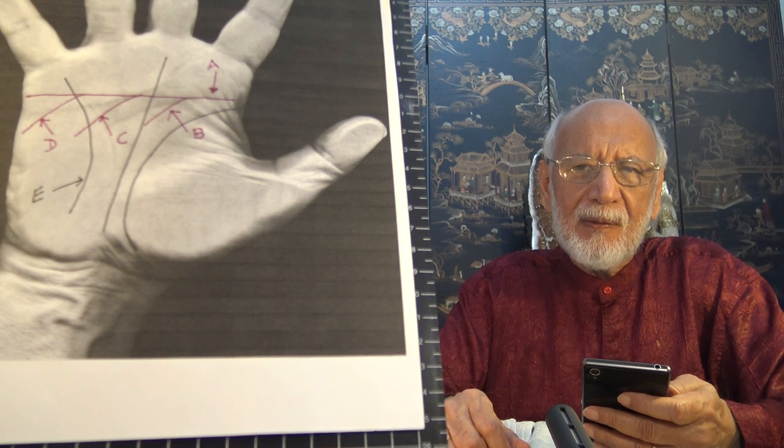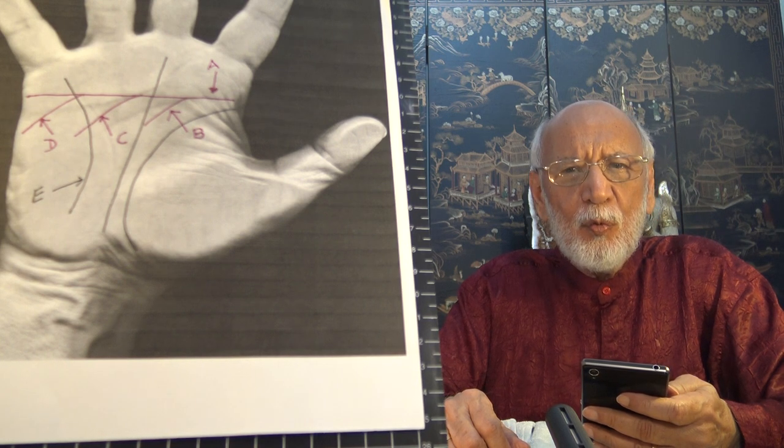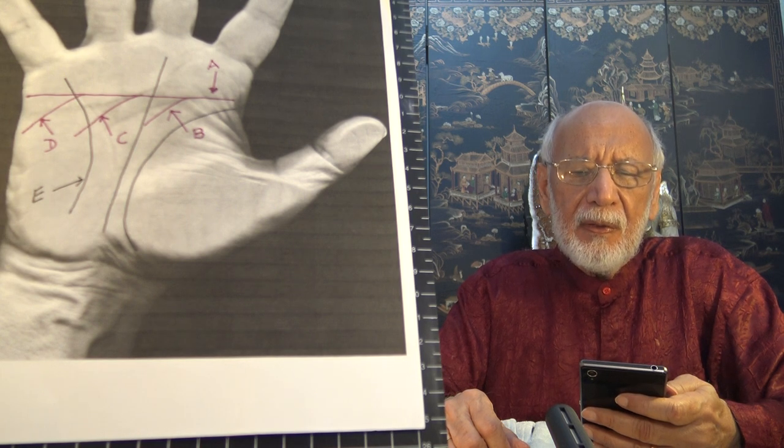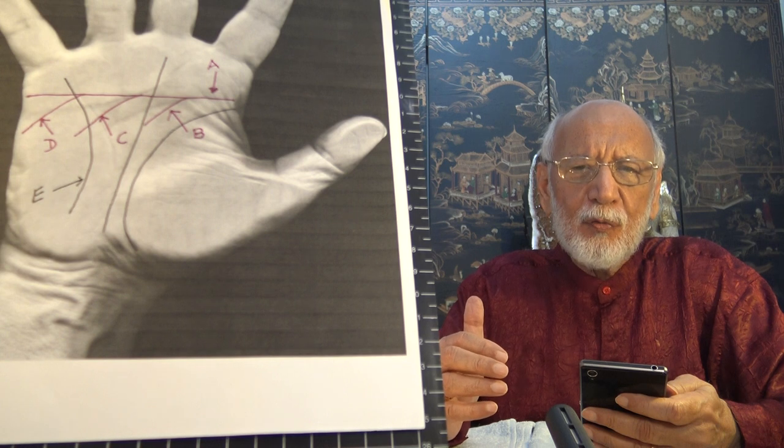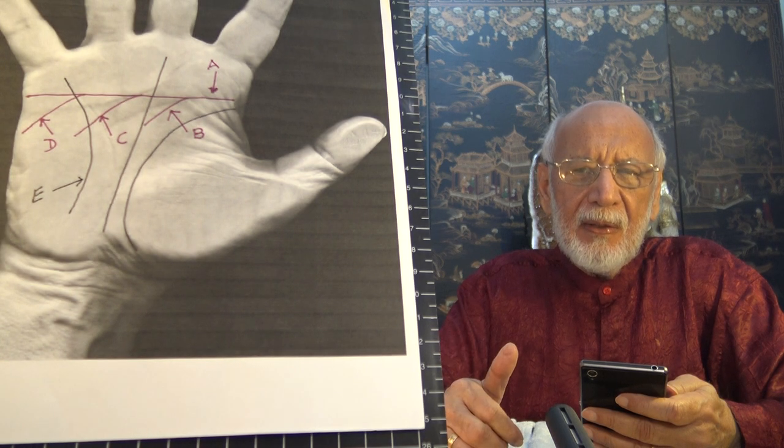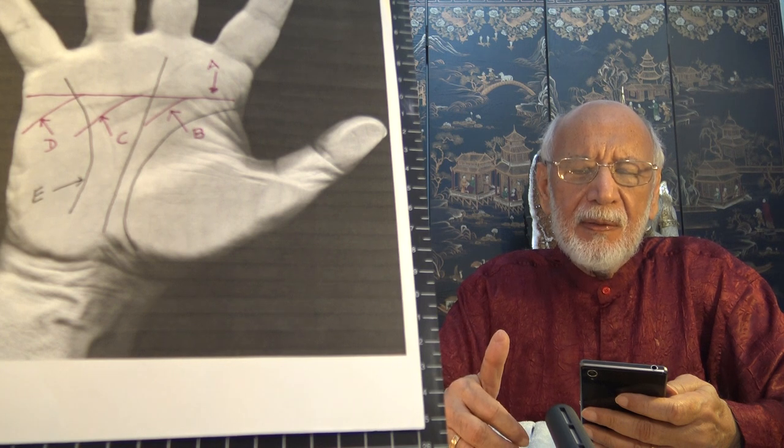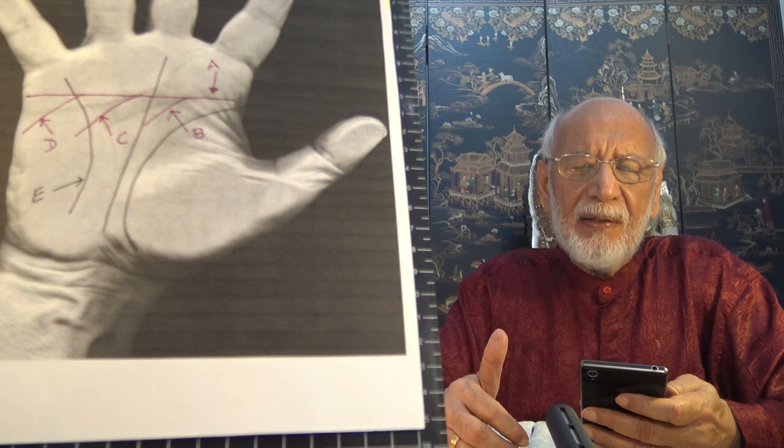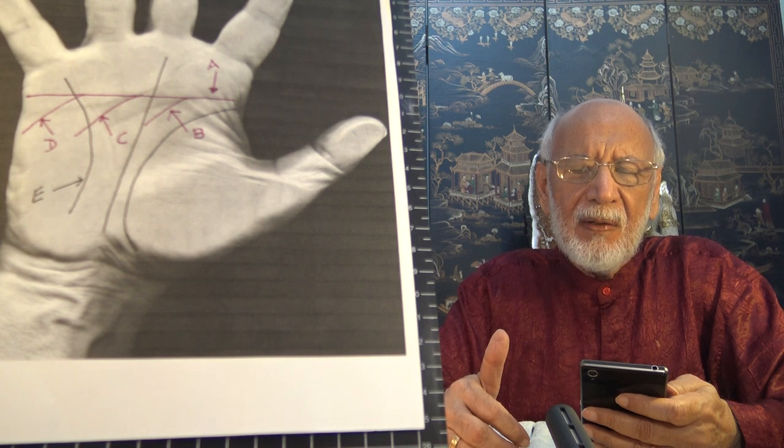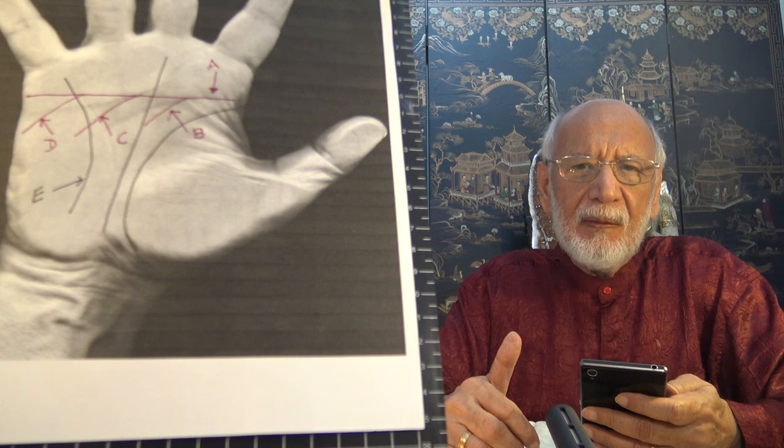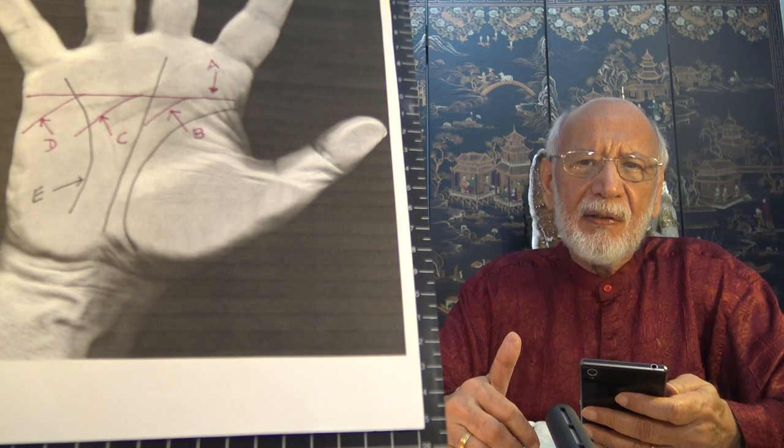with simian lines. When these two, the head line and the heart line, merge, it depends how close to the fingers they merge. If they merge where the head line was lower, then it's the head that's taken over the heart. If they merge a bit higher in a higher part of the palm, then it's the heart that's taken over